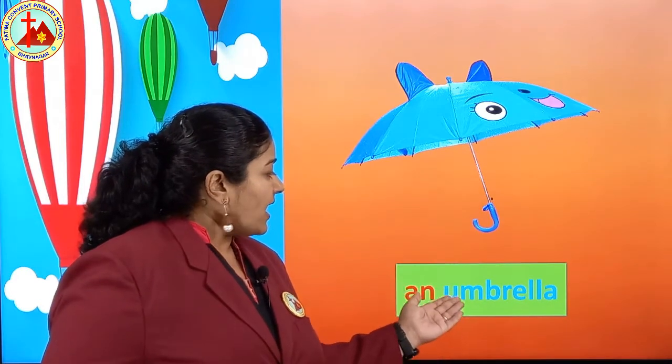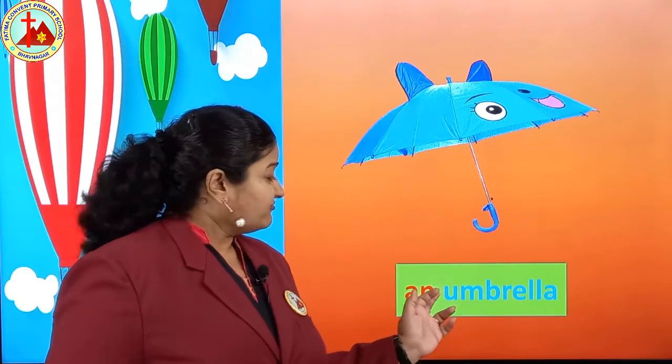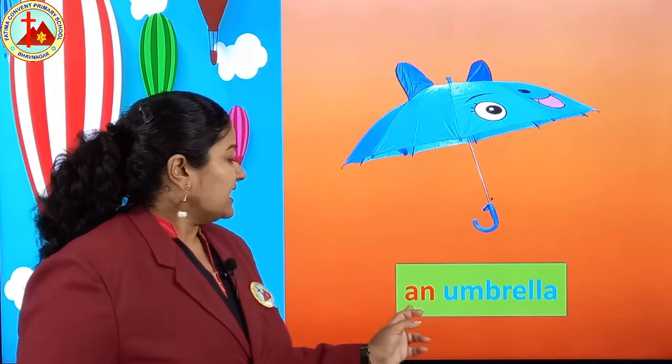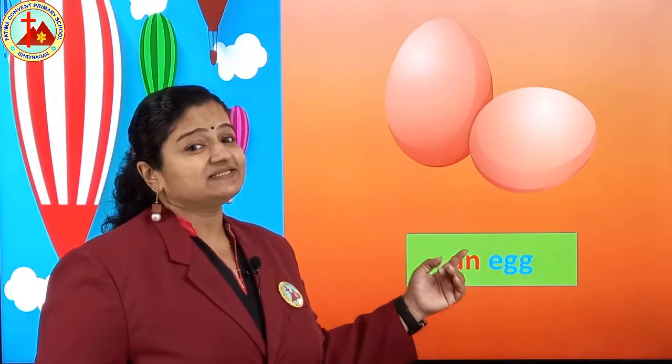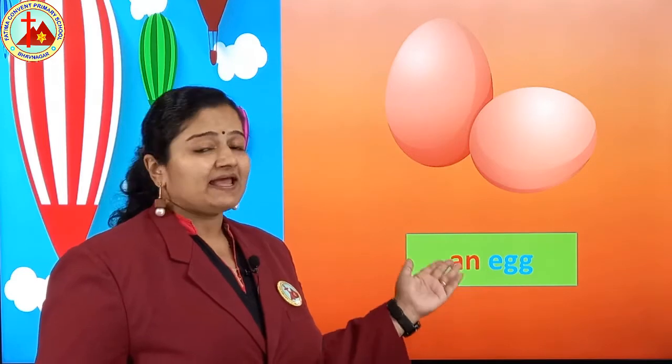Next one is umbrella. Umbrella spelling starts with U — U, M, B, R, E, double L, A — umbrella. First letter of umbrella is U. U is a vowel. So we put AN: an umbrella. Children, got it? Next one is egg. Egg spelling starts with E, double G — egg. E is the vowel, so we put AN: an egg.